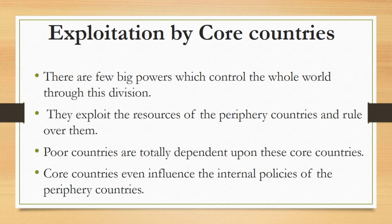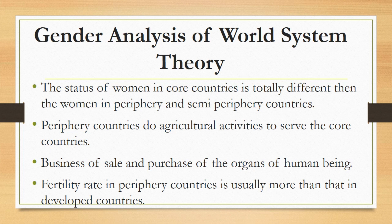Keeping all three divisions of countries in mind, we will try to see how such divisions are exploiting women. The status of women in core countries is totally different from that of women in periphery and semi-periphery countries. Women in core countries like the US and UK are enjoying their rights. On the other hand, women in periphery countries don't have those rights because of the overall economic situation. Women of periphery countries usually do hard work in the agriculture sector to serve the core countries — so core countries are essentially exploiting these women.